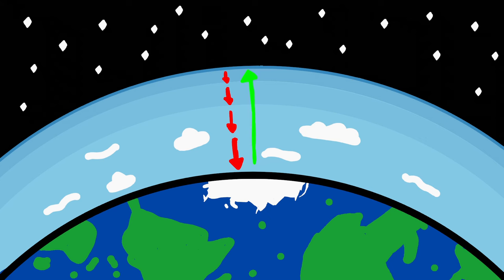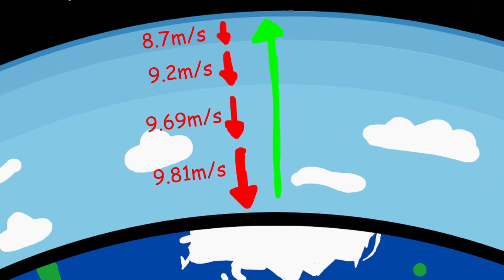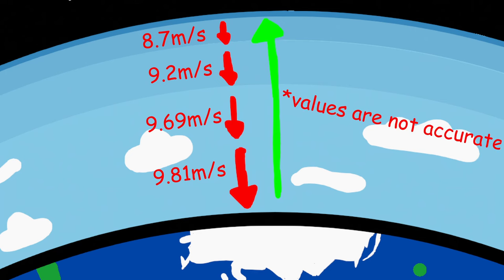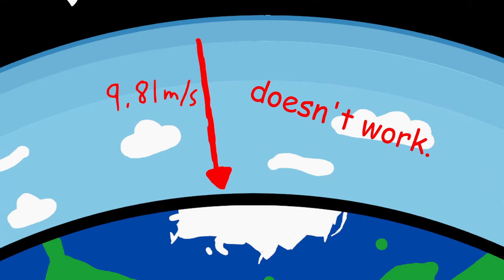Despite being called escape velocity, it doesn't exactly mean you completely escape the effects of gravity. Gravity is a dynamic force — it's constantly there, but its value is also constantly changing. Going back to what I said: the further you get from the center of mass, the weaker the gravitational pull gets, and escape velocity operates off of that very premise. If gravity was a constant value, then escape velocity wouldn't exist.